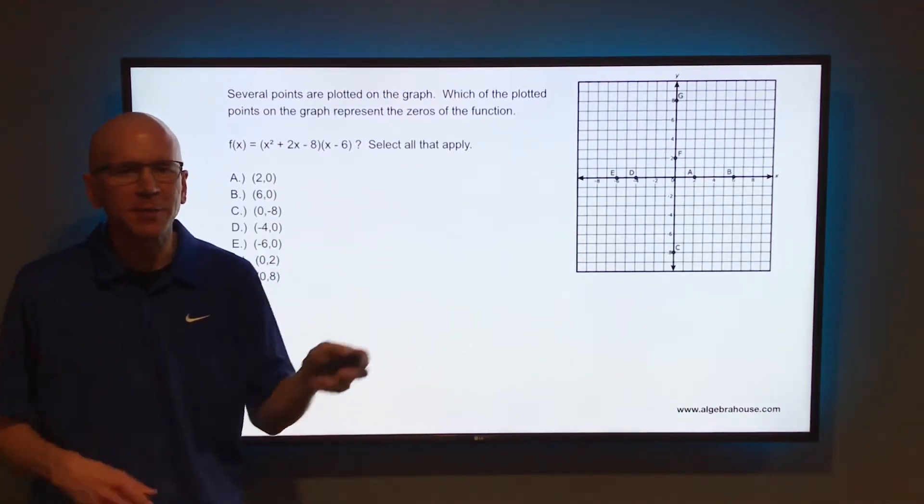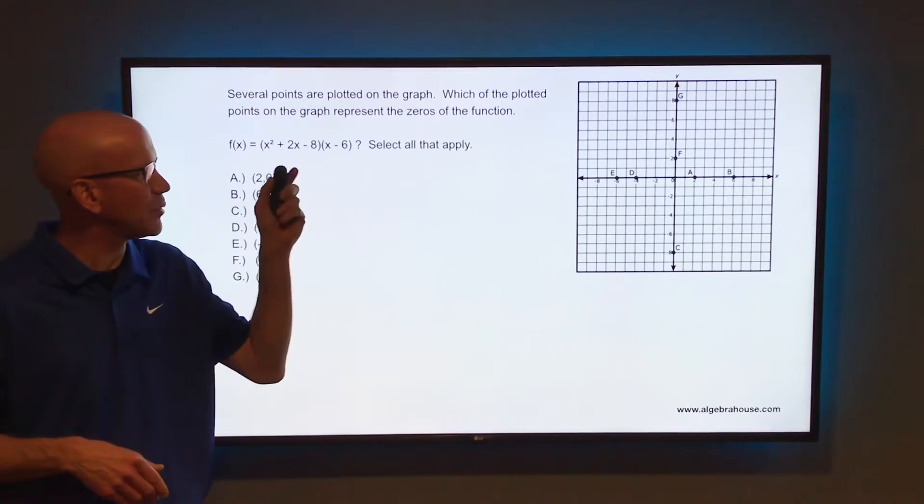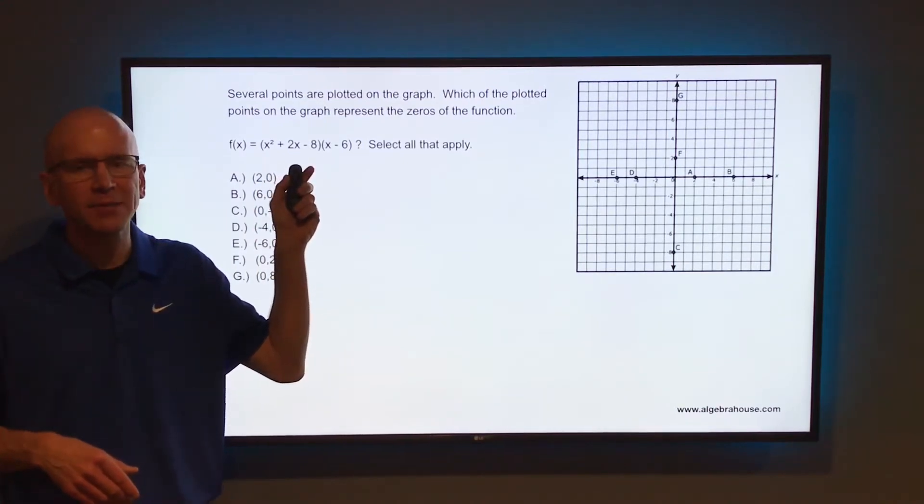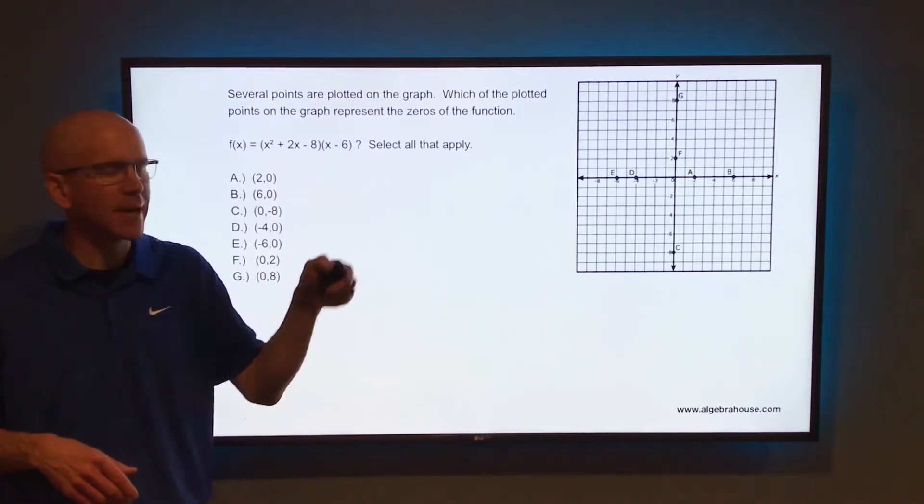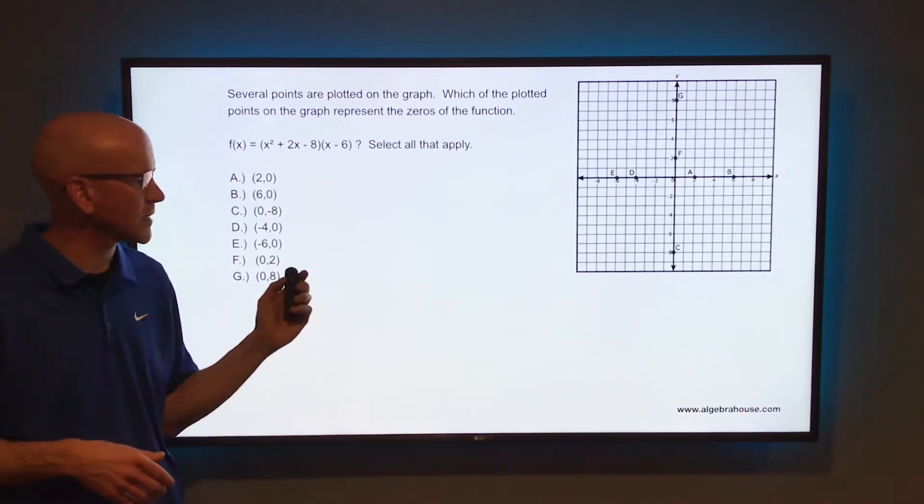Several points are plotted on the graph. Which of the plotted points on the graph represent the zeros of the function f(x) = x² + 2x - 8 times (x - 6)? Select all that apply.